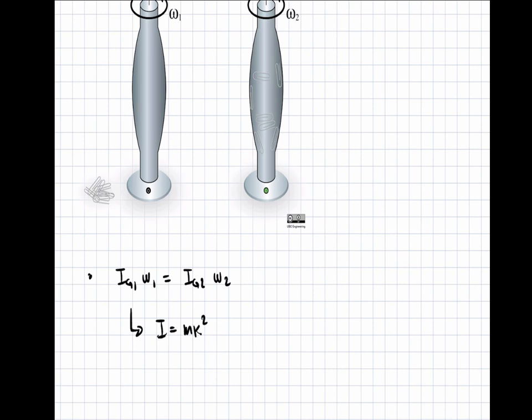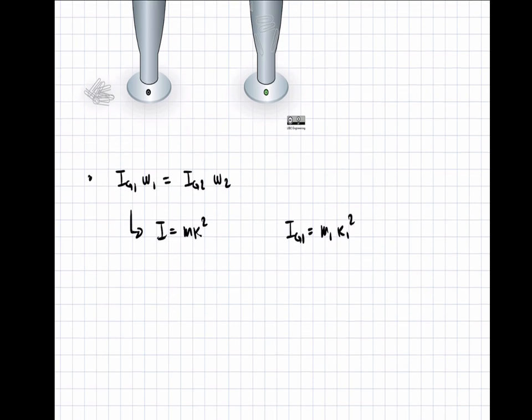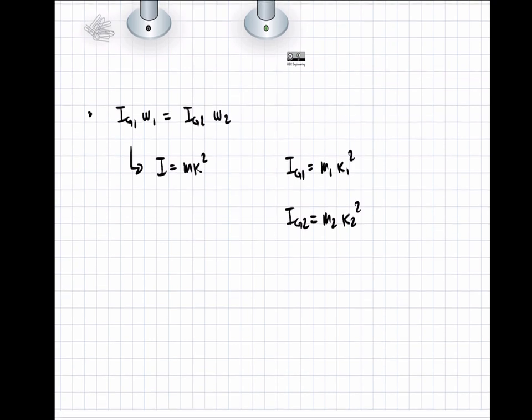We can calculate I_G1 equals m_1 k_1 squared. These are properties that are given in the problem. Then we can say that I_G2 equals m_2 k_2 squared. Now these are the properties that are unknown.